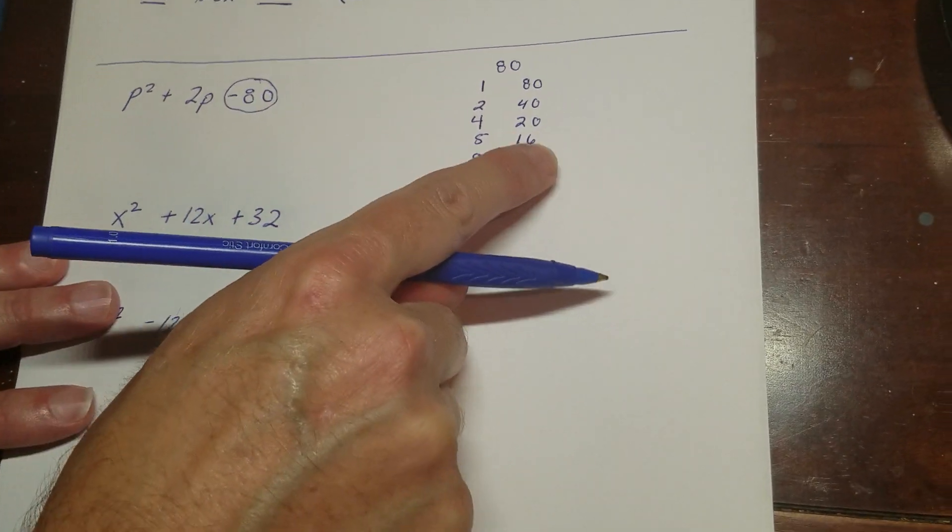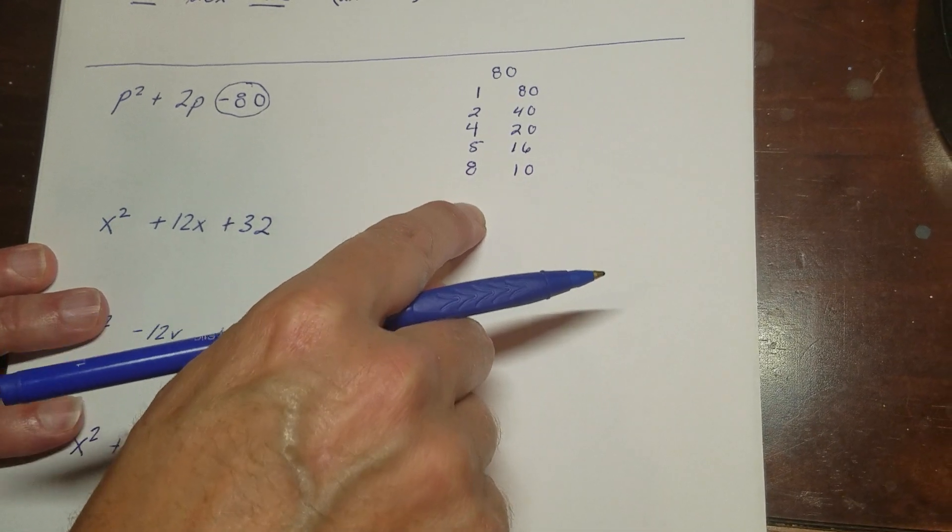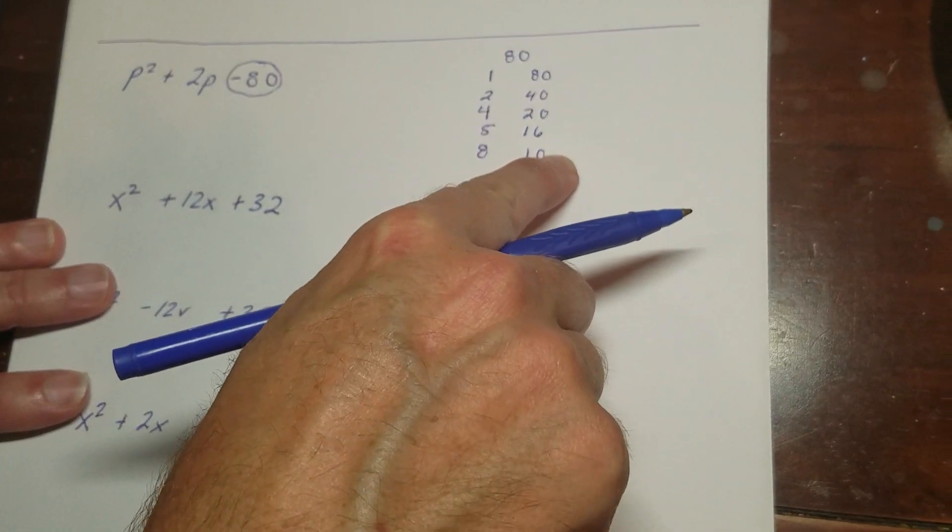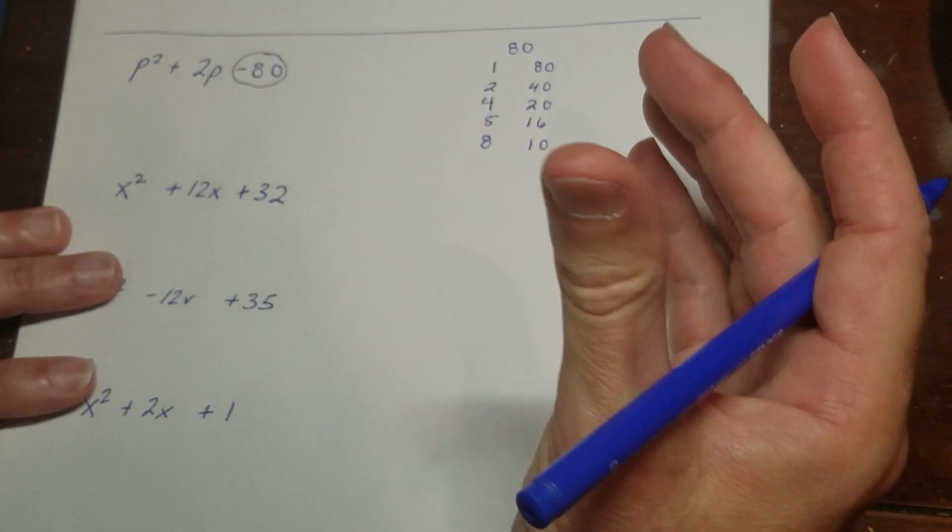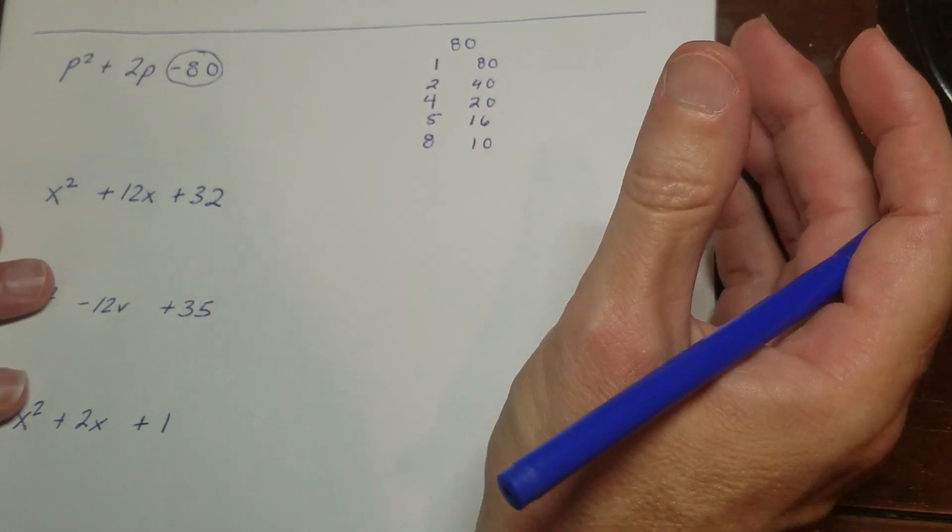1, 2, 4, 5, 8, 10, 16, 20, 40, 80. So when you keep counting up, and you realize that you're over on this side now, that means that you've got them all. And if you do it this way, you will never forget a single factor, and you'll have everything you need.